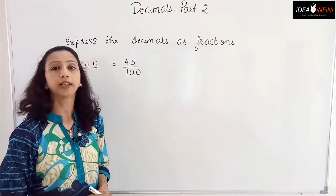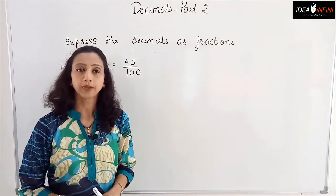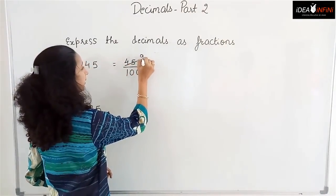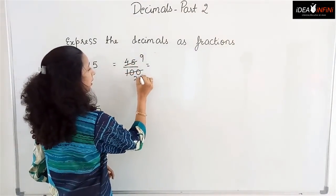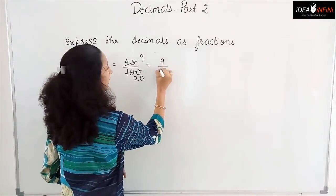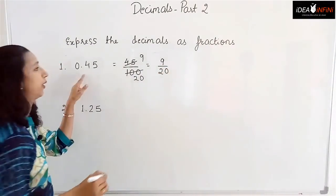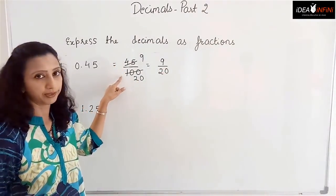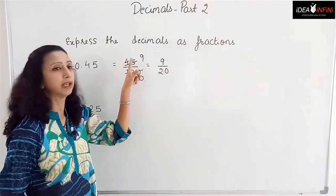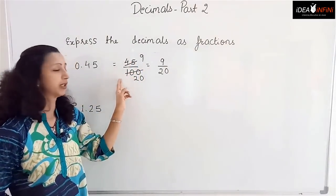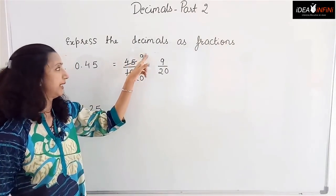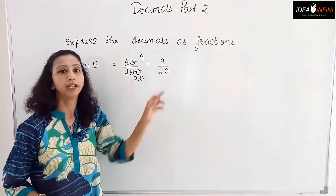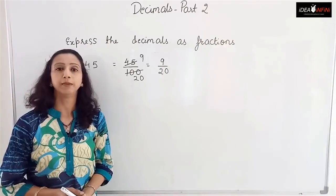45 by 100 is not in lowest terms. Dividing both by 5 gives 9 by 20. So 0.45 as a fraction in lowest terms is 9 by 20.